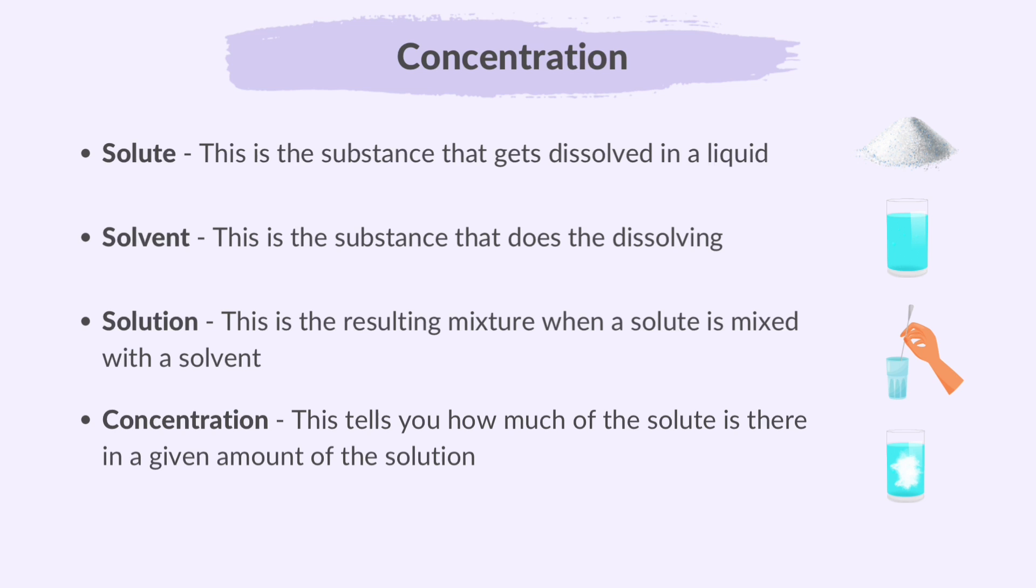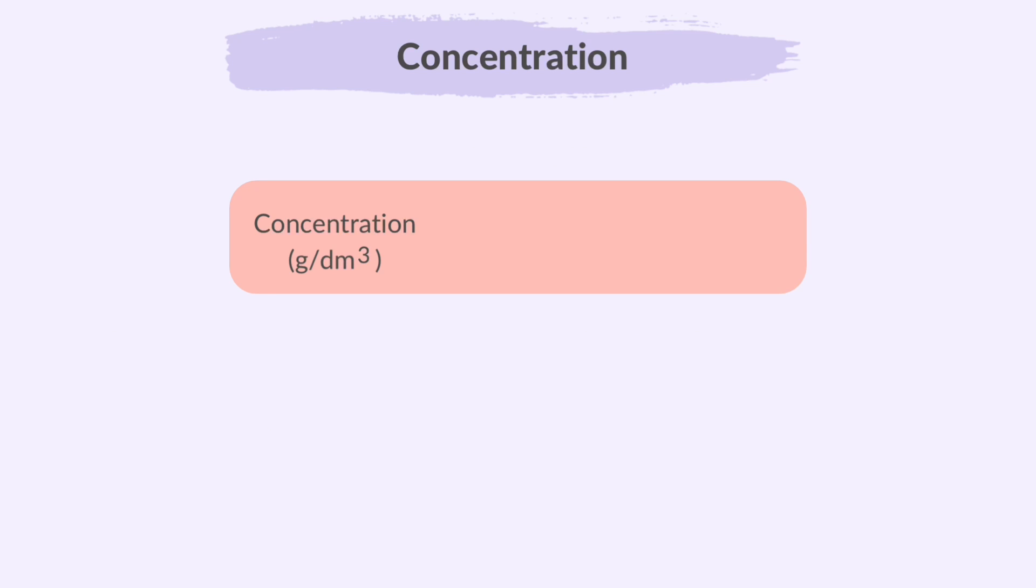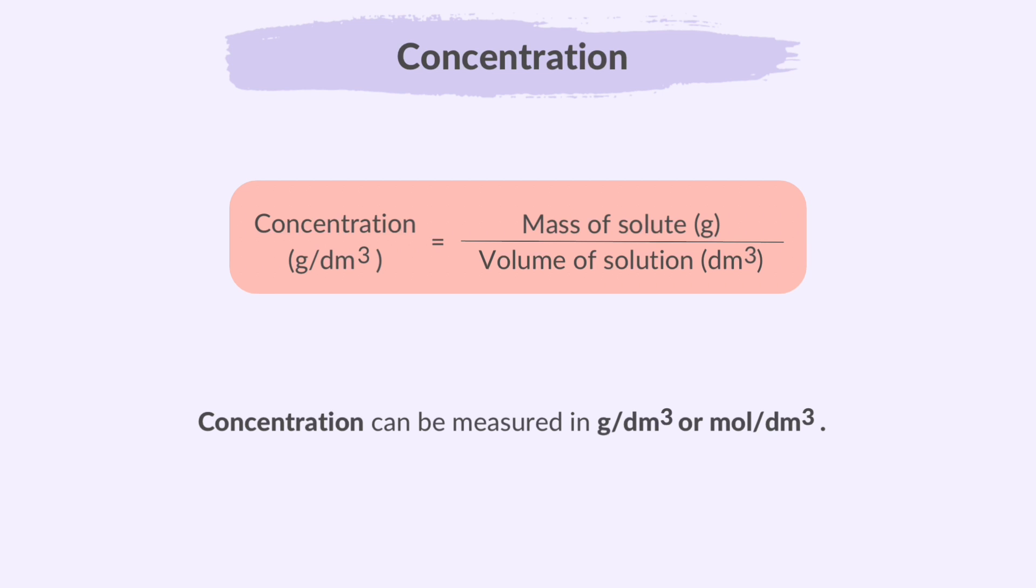Concentration tells you how much of the solute is there in a given amount of solution. It's like the strength or the amount of the solute in the mixture. The concentration increases when the amount of solute in a particular volume increases. Concentration can be found by dividing the mass of solute by the volume of solution. Concentration can be measured in grams per dm cubed or moles per dm cubed. You may come across questions where you will need to convert from dm cubed to cm cubed or vice versa.